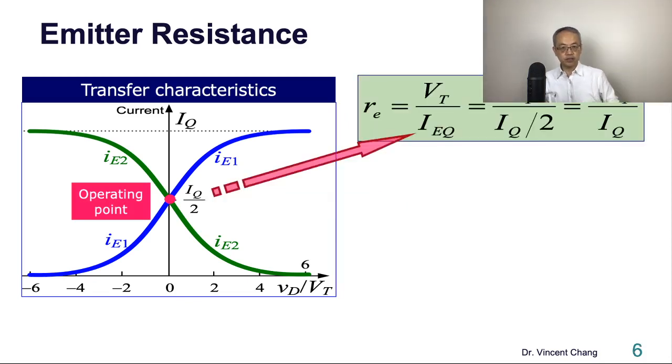So what's the value around the operating point, at the operating point? Half IQ. So you just plug in, therefore, for this reason, you just plug in the half IQ into the denominator, the formula, the DC emitter current. Then you get this result.